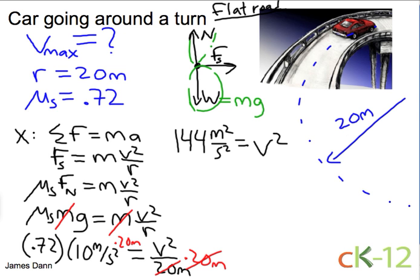And now if I just square root both sides, I get the final answer of the speed, max speed to take this turn at, is 12 meters per second.